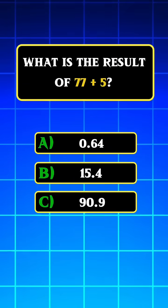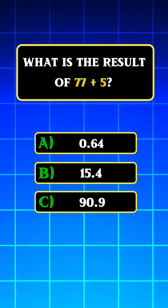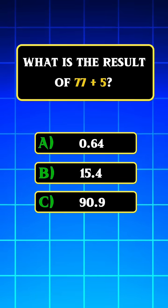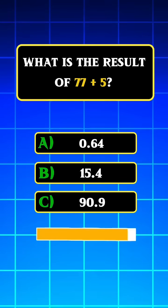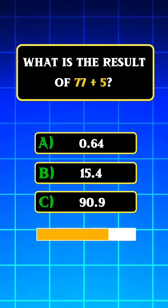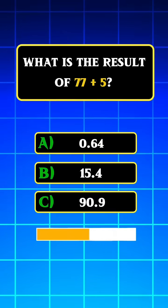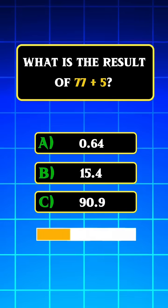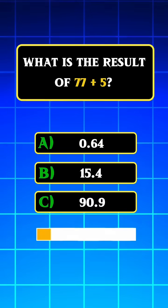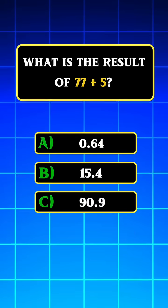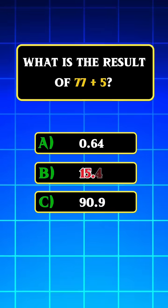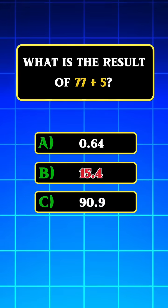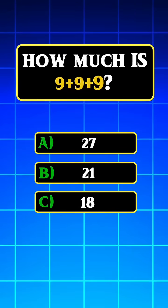What is the result of 77 divided by 5? Answer B: 15.4.